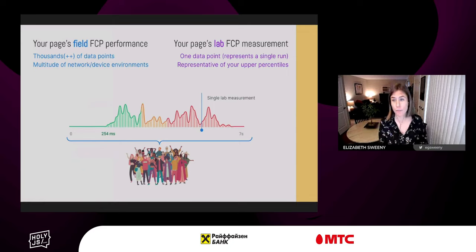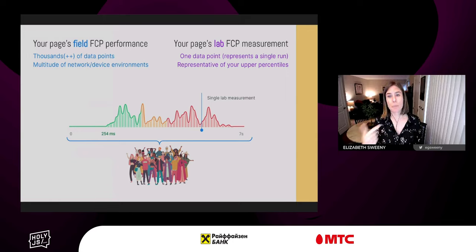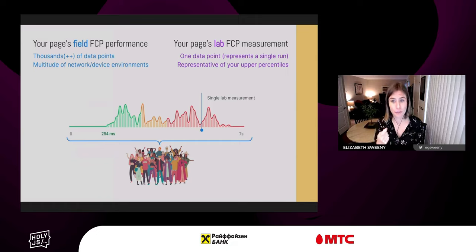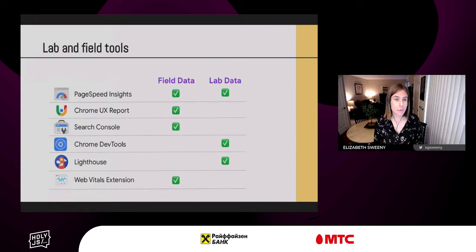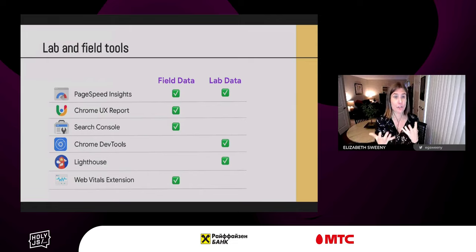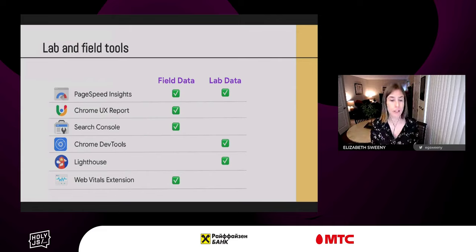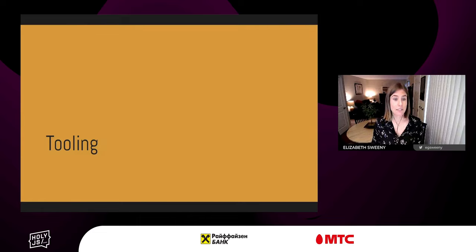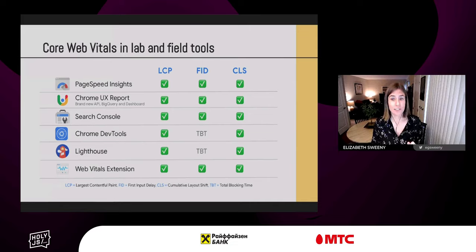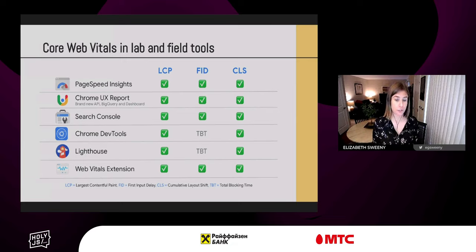When you run Lighthouse on your page and get an FCP value, it is a single data point collected in real time, calibrated to represent a user in your upper percentiles. This allows you to use a single set of values as representative of your users' experience so you can dive deep and debug against that. We try to provide ample coverage in both lab and field tools — field tools to show what real users are experiencing, and lab tools like Lighthouse CI to give you a reproducible environment to debug and optimize.